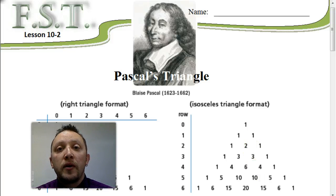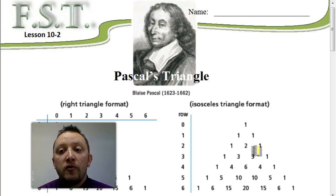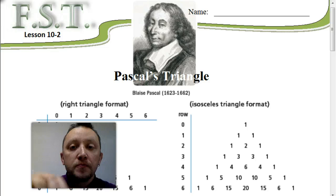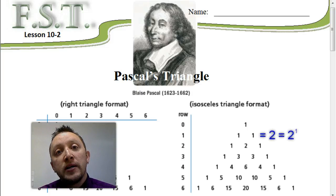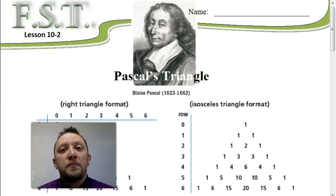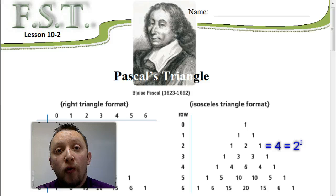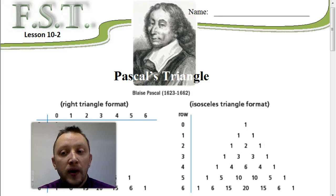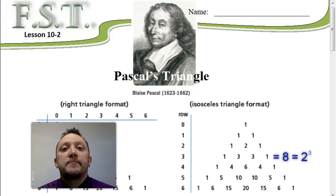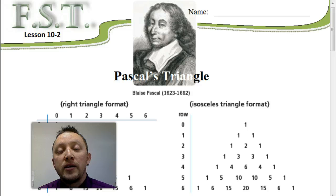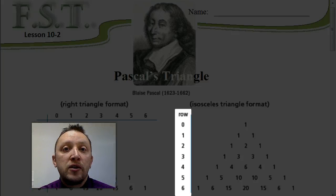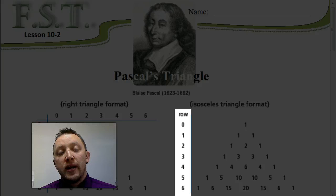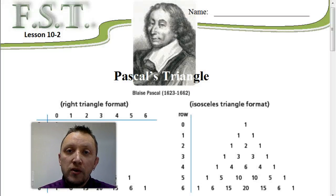Another interesting pattern deals with base 2. If you add up each row, the sum for that first row is just 1. Well, 2 to the 0 power is 1. The sum for the second row, 1 plus 1, is 2 — and 2 to the first power is 2. The third row, 1 plus 2 plus 1, is 4, and 2 squared is 4. The next row, 1 plus 3 plus 3 plus 1, is 8, and 2 cubed is 8. So the sum of each row can be found by taking 2 to the nth power, where n refers to the row number. By the way, the first row is row 0, the second row is row 1, the next row is row 2, and so on.